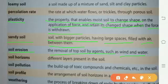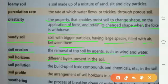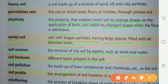Soil horizons: different layers present in the soil. مٹی کی الگ الگ جو layer present ہوتی ہیں اس کو soil horizons کہا جاتا ہے. Soil pollution: the build-up of toxic compounds and chemicals etc. in the soil. soil کے اندر toxic compounds اور chemicals کا build up ہونا soil pollution کہلاتا ہے.